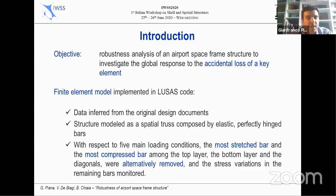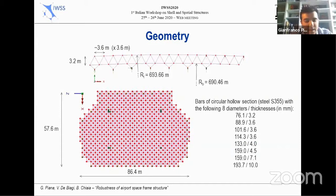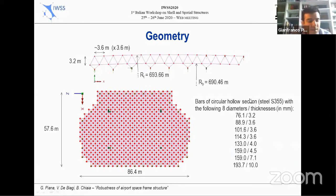The roof has maximum plane dimensions of about 86 by 58 meters and presents a small curvature in the transverse, the shorter X direction. The grid of the top and bottom layers is about 3.6 by 3.6 by 3.6 meters, with slight differences in the transverse direction according to the two different radii of curvature. The distance between the two layers is 3.2 meters. The bars are made of steel S355 and have a circular hollow section with eight different diameters and thicknesses.